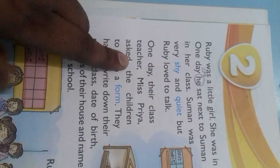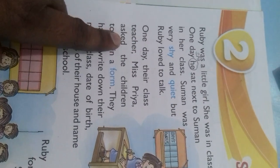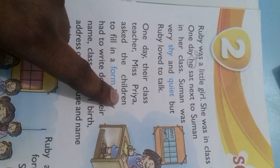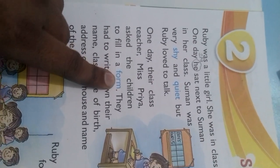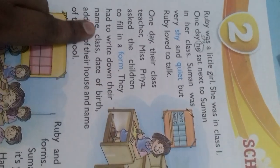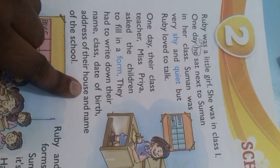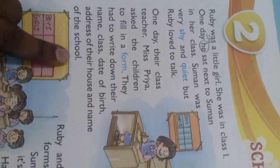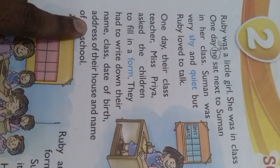Yeh Suman hai, yeh Ruby hai. One day, their class teacher Miss Priya — unki class teacher jinka naam tha Miss Priya — asked the children to fill in a form. They had to write down their name, class, date of birth, address of their house, and name of the school. Bachcho ko us form mein apna naam, class, date of birth, ghar ka address, aur school ka naam likhna tha.